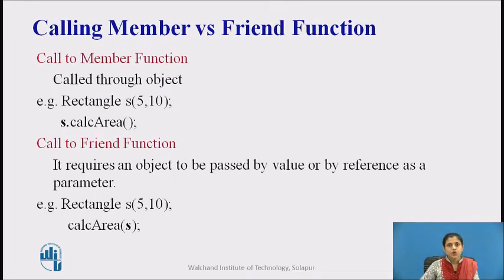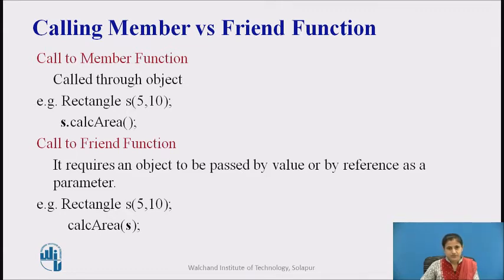Let's see an example to call a member function versus a friend function. A member function is called through an object: S is an object of the rectangle class, and calc_area is called by the statement s.calc_area(). A call to a friend function requires an object to be passed by value or by reference as a parameter. The statement calc_area(s) calls the calc_area function and passes object s as a parameter. This is the key difference between calling a member function and a friend function.